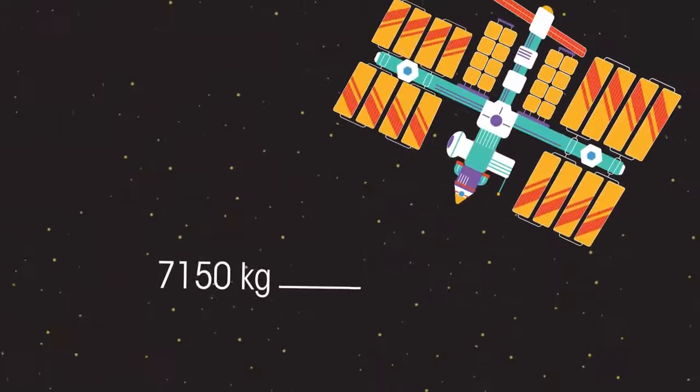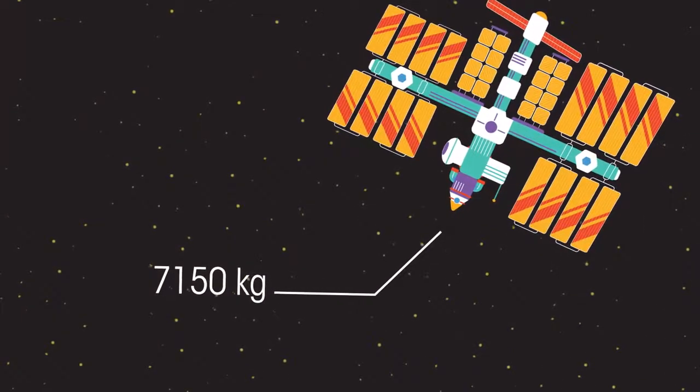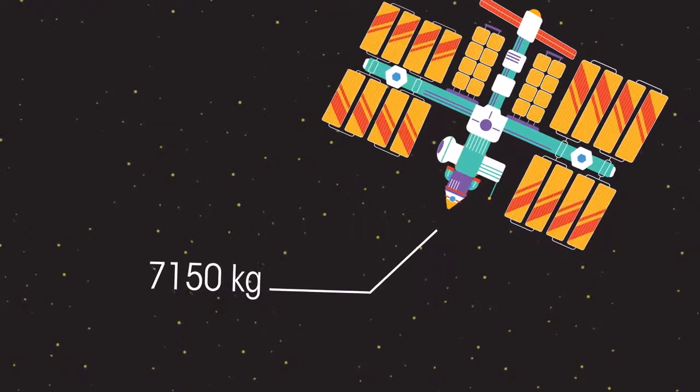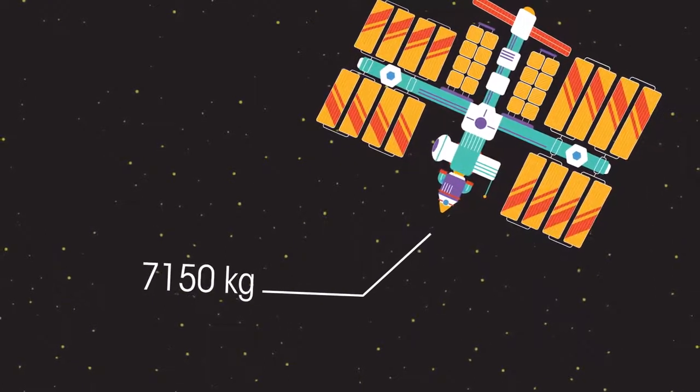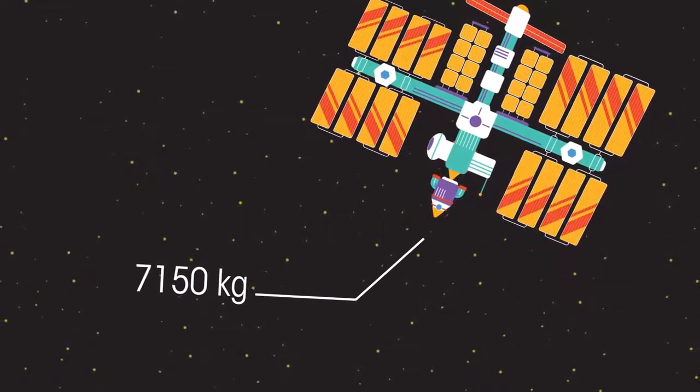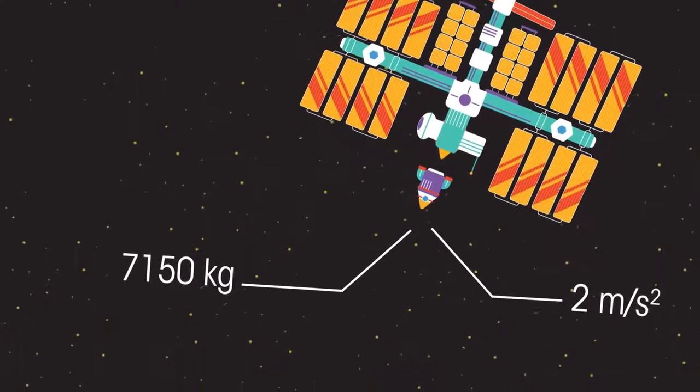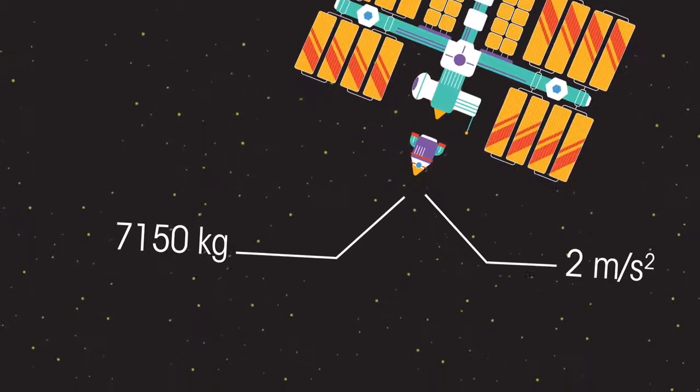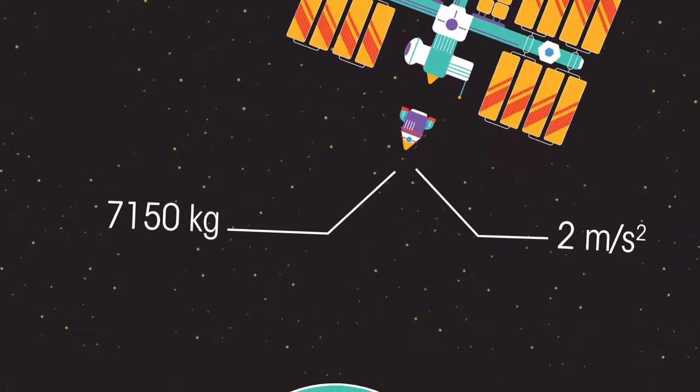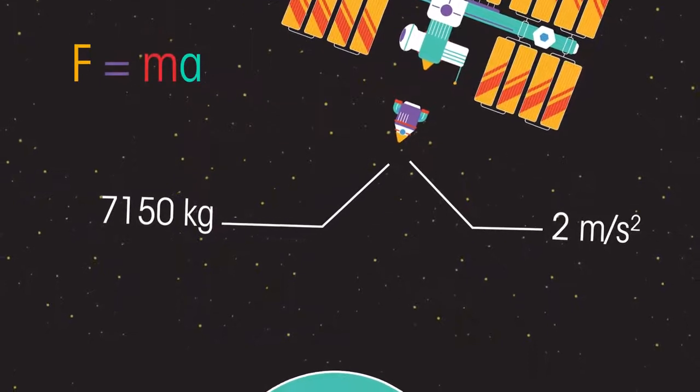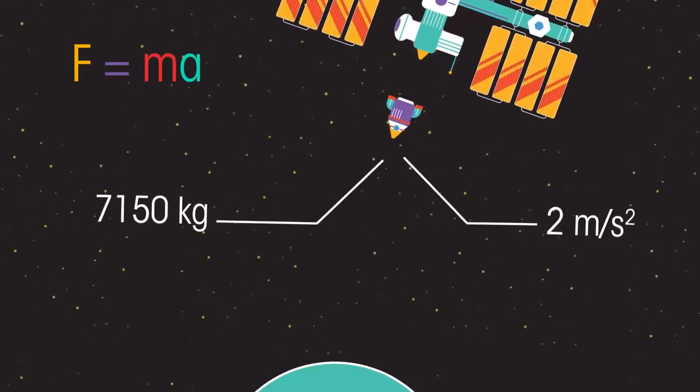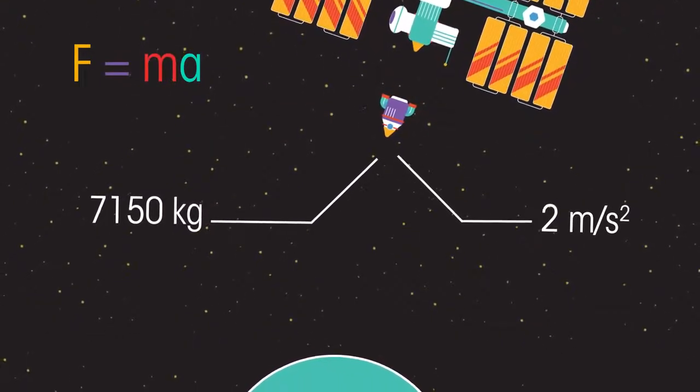A spacecraft with a mass of 7,150 kilograms accelerated away from the International Space Station towards its re-entry point with an acceleration of 2 meters per second per second relative to the International Space Station. Calculate the resultant force on the spacecraft. Pause the video and work it out.